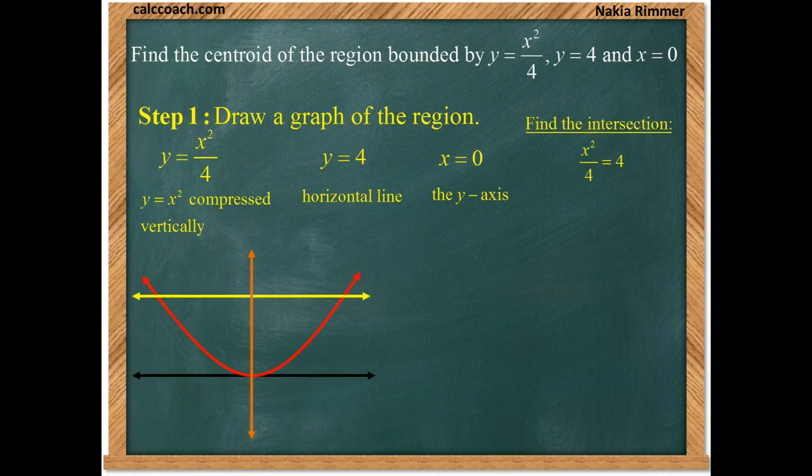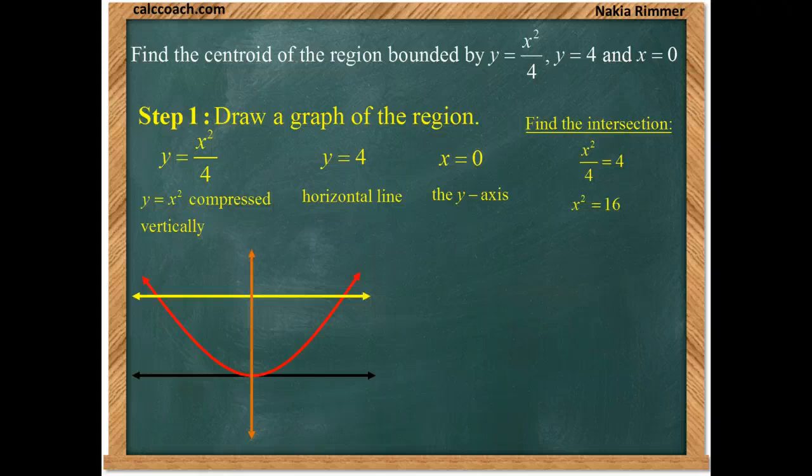So, x squared over 4 must equal to 4, or that x squared is 16. And that gives it x is plus or minus 4.